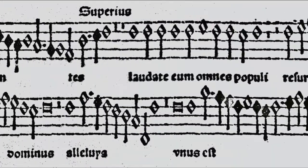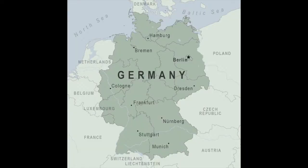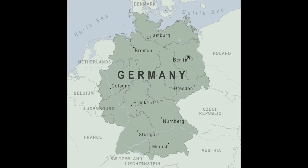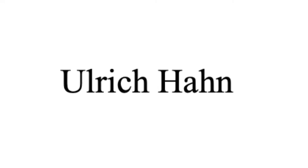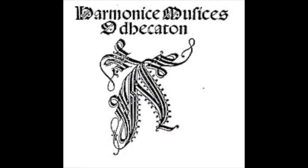The first fully printed music appeared in Germany in the late 15th century. The first person who printed the music score was Ulrich Kahn. Ottaviano Petrucci was the first person who used movable type to make polyphonic music, called the Harmonische Musisches Odekaton A.